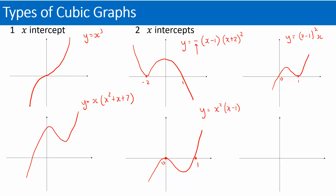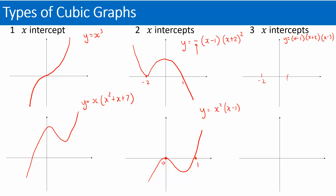The third type — and the easiest to draw — is where you have three x-axis intercepts. They'll look like this: x minus one, x plus two, x minus three. You've got three brackets, which implies three intercepts at one, negative two, and three. It's a positive graph — it goes up, down, and back up through those three points.